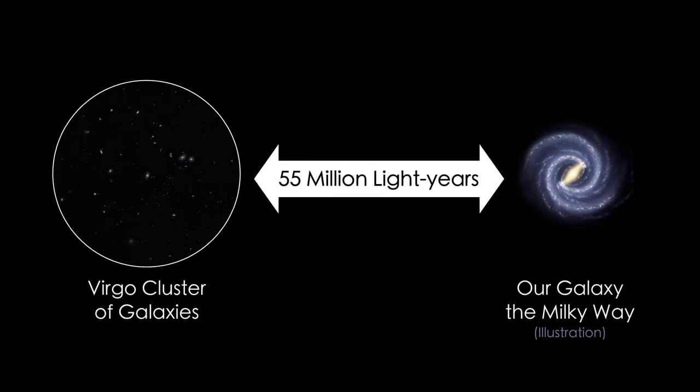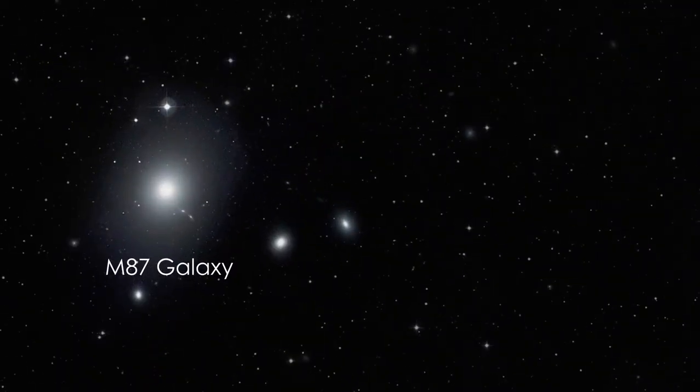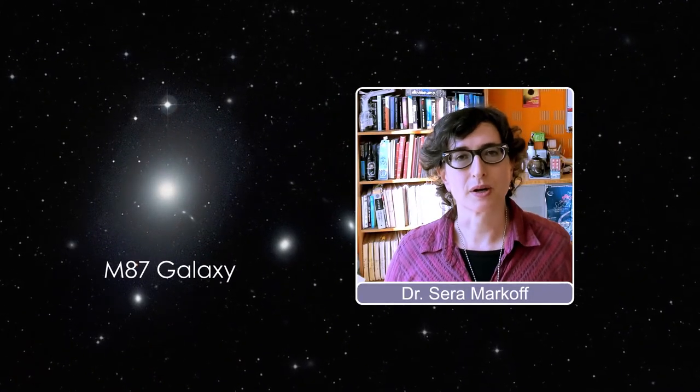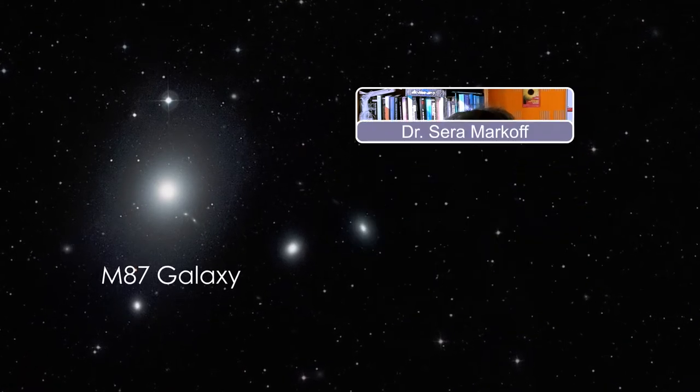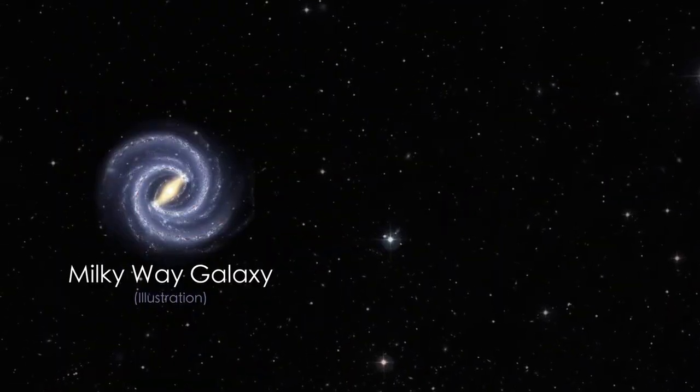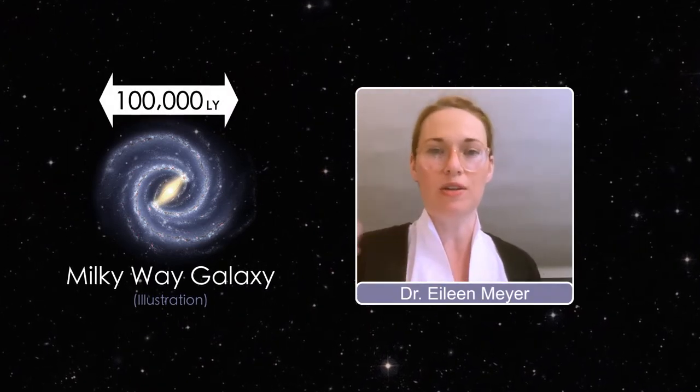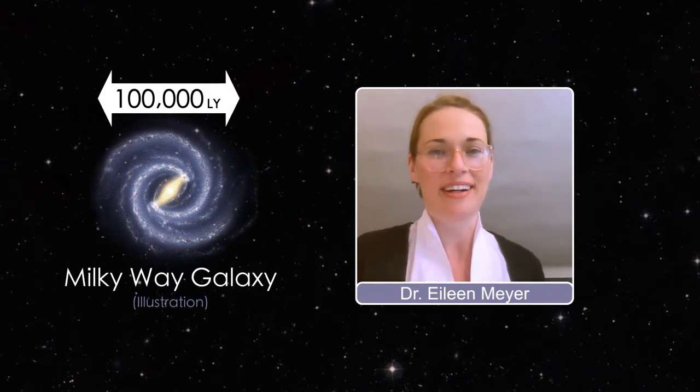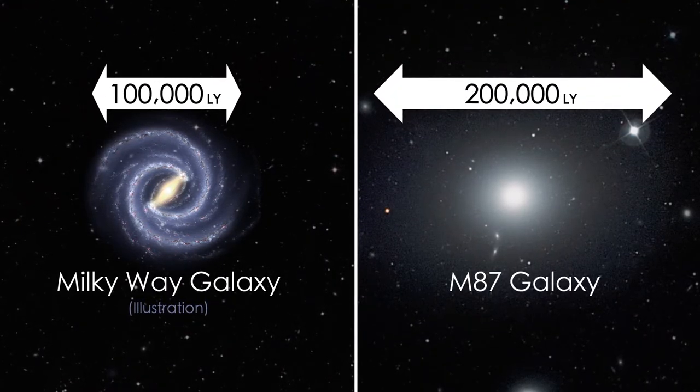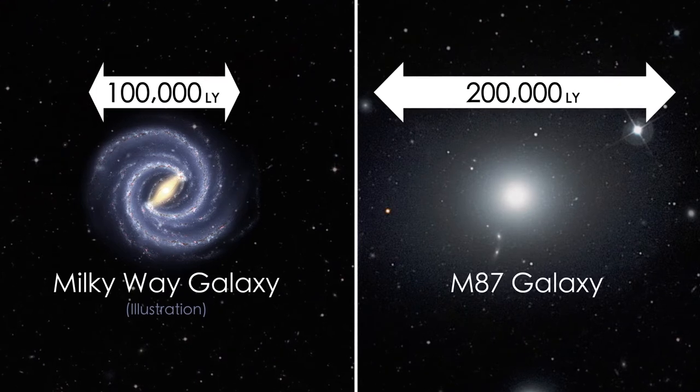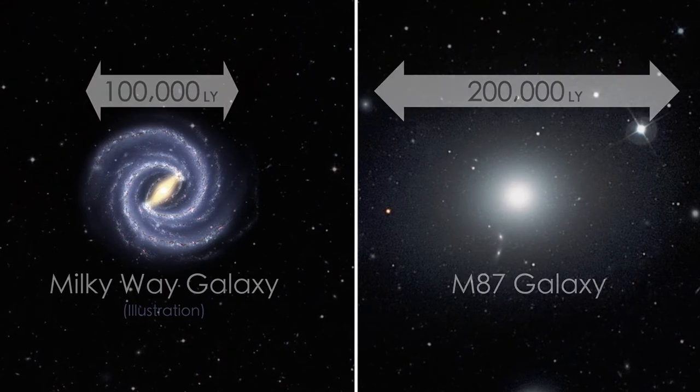M87 and our own Milky Way are extremely different galaxies. M87 is what we call an elliptical galaxy for obvious reason. It looks like a big elliptical ball. The Milky Way is a spiral galaxy. It's only about 100,000 light years across. I say only. Whereas the elliptical galaxy of M87 is probably at least 200,000 light years across. So it's significantly bigger and it contains more stars compared to the disk of the Milky Way.